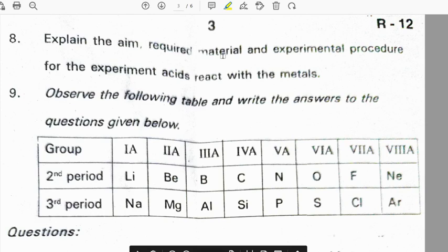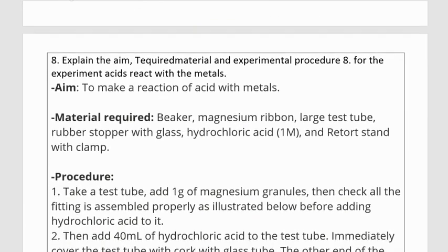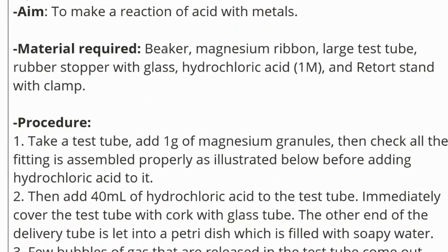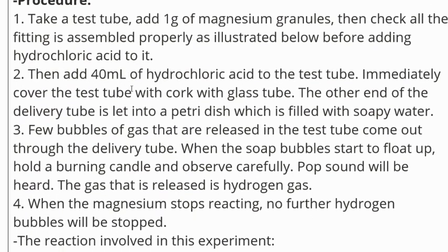Eighth question: explain the aim, required material and experimental procedure for the experiment as it reacts with the metals. Aim is to make reaction of acid with metals. Material required: beaker, magnesium ribbon, large test tube, rubber stopper with glass, HCl and retort stand with clamp.